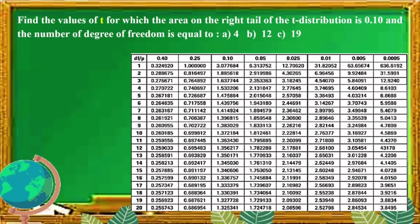So, for the second example, find the values of T for which the area on the right tail of the T distribution is 0.10 and the number of degrees of freedom is equal to 4, 12, and 19. In here, our area on the right tail is 0.10. Using the degree of freedom of letter A, which is 4, the T value is 1.533206 or we can round it off into 3 decimal places, making it 1.533. That is our T value for degrees of freedom 4.